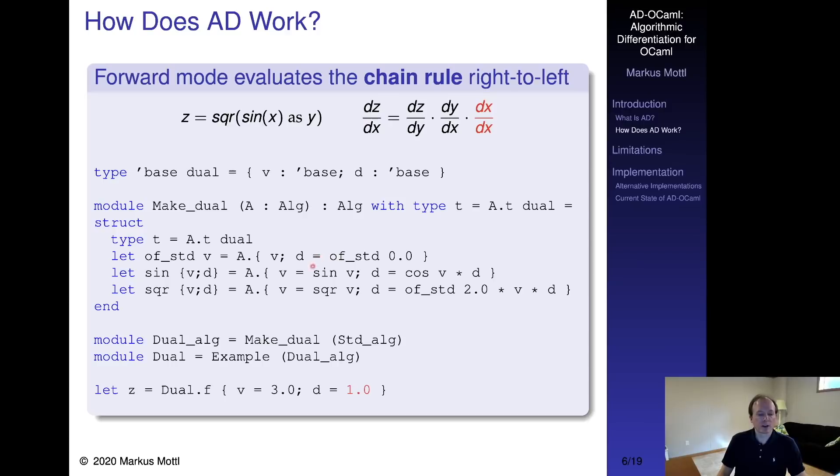We now instantiate the MAKE_DUAL functor with the standard algebra and our example program with the augmented dual algebra. Then we evaluate the program with the augmented input to obtain both the function value and its exact derivative in one fell swoop. The user program did not require any modification whatsoever. As you can see, the function argument is also augmented with the rightmost part of our chain rule here, dx over dx, which is just one.